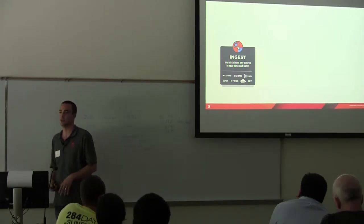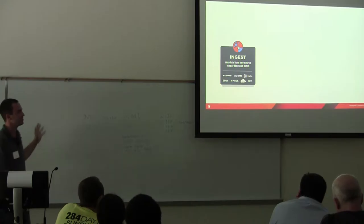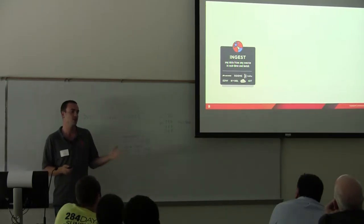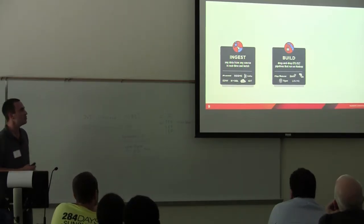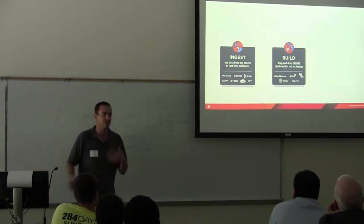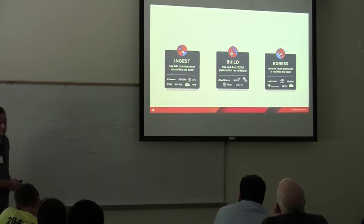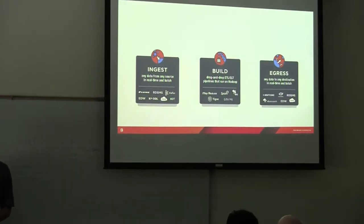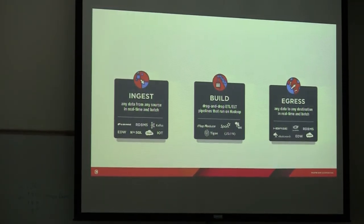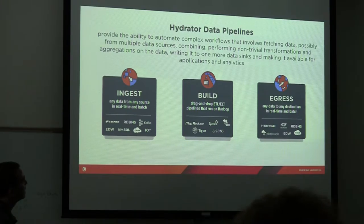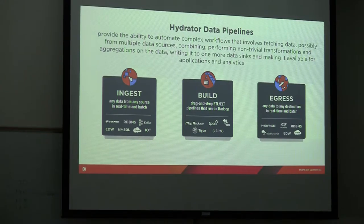There are three core tenets of what Hydrator enables. First, data ingest: taking data from sources like Hadoop clusters, S3, REST APIs, databases, or data warehouses. Second, building custom ETL and ELT pipelines with transformations, parsing, encryption, and data masking. Third, writing data out to destinations — HBase, HDFS, NoSQL stores like Cassandra, Elasticsearch, or back into the cloud — and making that data accessible to SQL tools so you can point Excel or other BI tools at it.